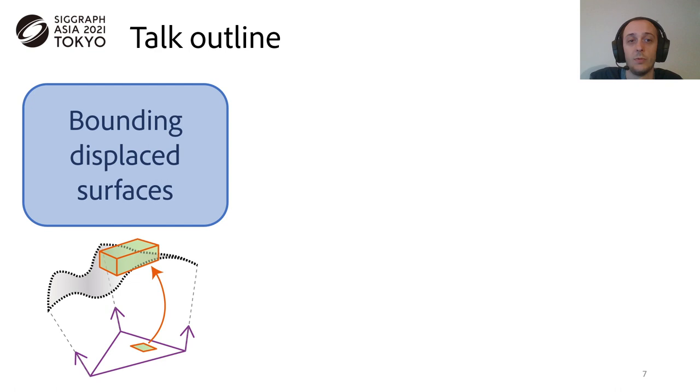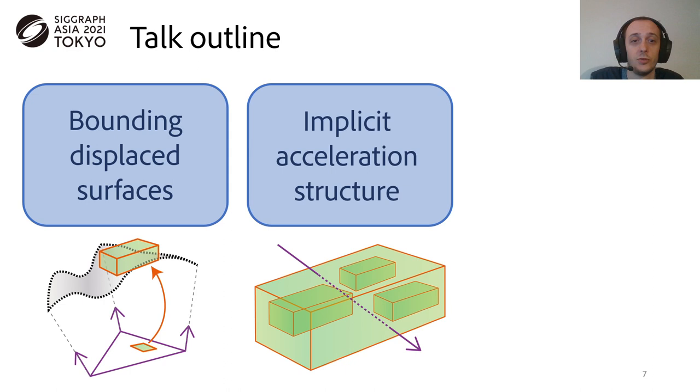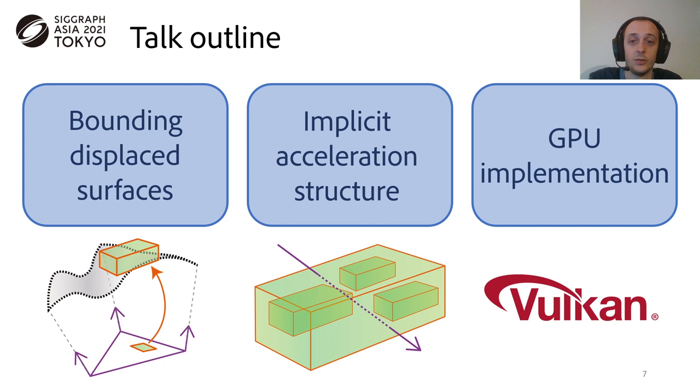In this talk, we will first see how to compute a bounding volume of the displaced surface for a given region on the base surface. We will then see how to use these bounding volumes to define an implicit acceleration structure that can be traversed to compute intersections with the displaced surface. Finally, we will cover some practical detail of the GPU implementation and some applications.